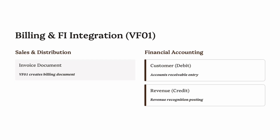Step 4: Billing and FI Integration (VF01). After delivery, it's time to generate the billing document — this is where the financial impact of the sale begins. In SAP SD, billing is done using transaction VF01. The billing document represents the customer invoice and serves as the bridge between Sales and Distribution (SD) and Financial Accounting (FI). To create the billing document, reference the delivery or sales order; the system copies pricing, quantities, and taxes automatically. When the billing document is saved, SAP automatically creates accounting entries: Debit Customer Account (Accounts Receivable), Credit Revenue Account. This ensures that both the sale and the receivable are recorded instantly.